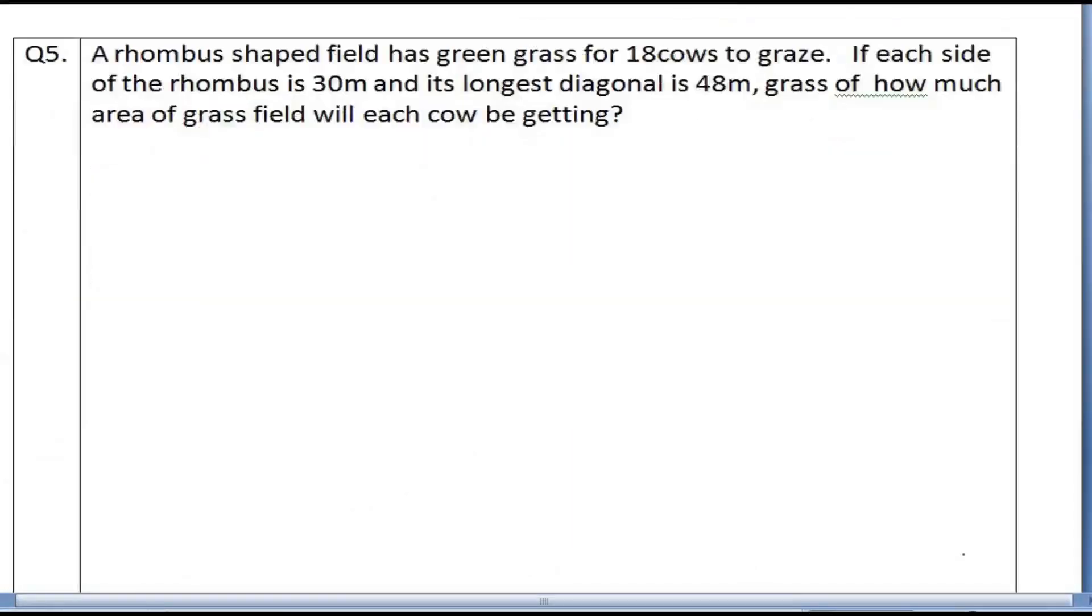Next. A rhombus-shaped field has green grass for 18 cows. A rhombus, this is A, B, C, D. Rhombus area for 18 cows which can graze. If each side of rhombus is 30 meters, and the longest diagonal is 48 meters, then how much area each cow will get for grazing?